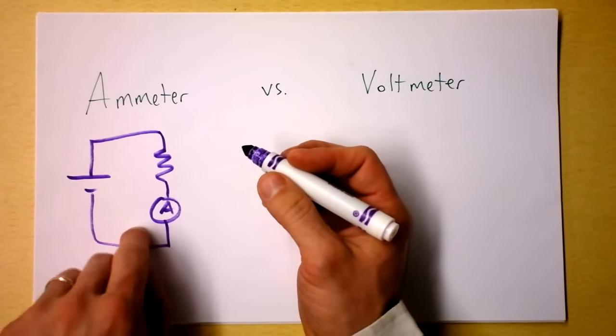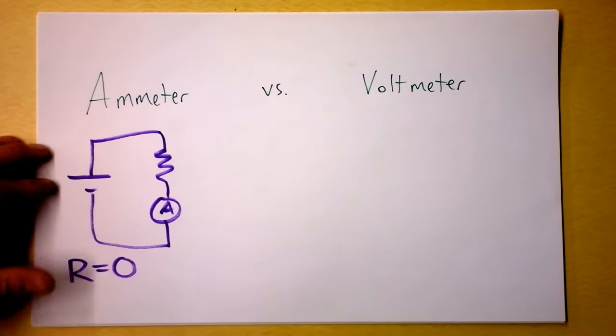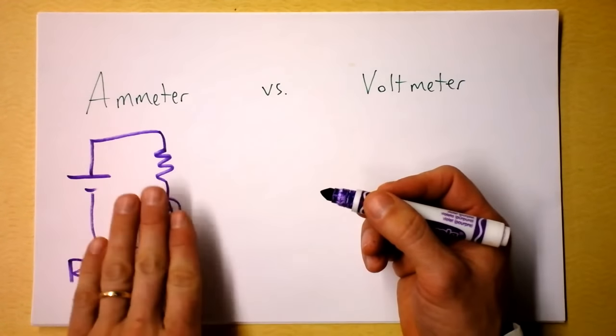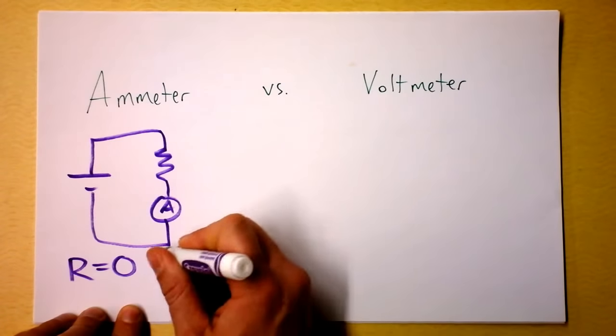And the current has to go through the ammeter, so you want resistance to be zero in an ammeter so that it does not disturb the current that you're trying to measure. Of course, that's impossible, but we hope it is.